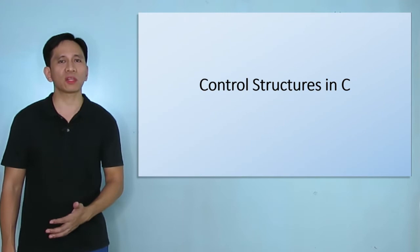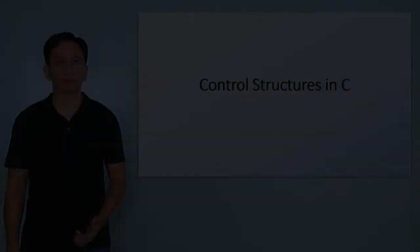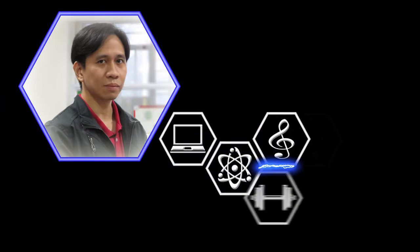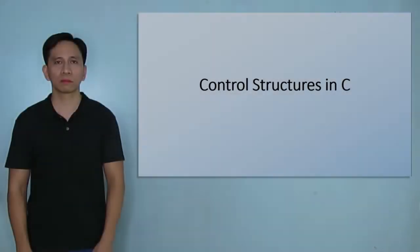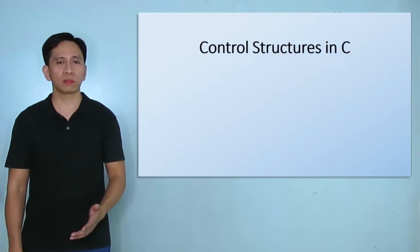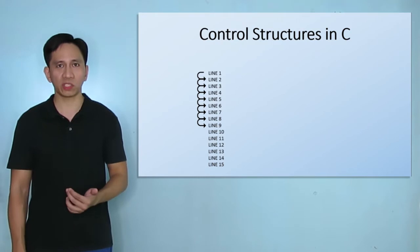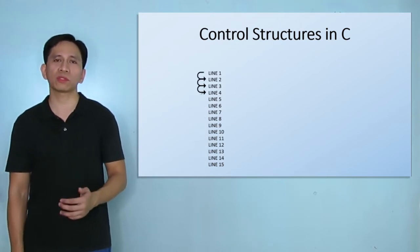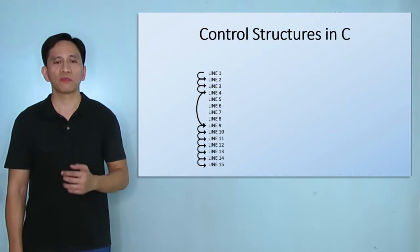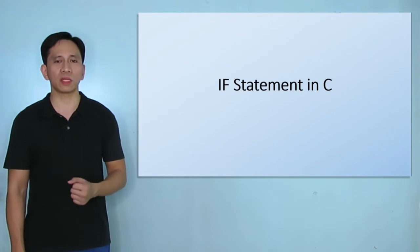What's up class? Our lesson for today is about control structures. So what are control structures? By default, each line of code of our program is executed sequentially. Control structures allow us to skip some lines based on certain conditions. The first control structure that we will talk about is the basic if statement.